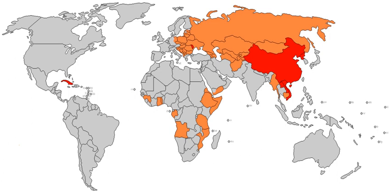By ownership of the means of production, the categories are: capitalism — private ownership of the means of production; mixed economy; and socialist economy — social ownership of the means of production.